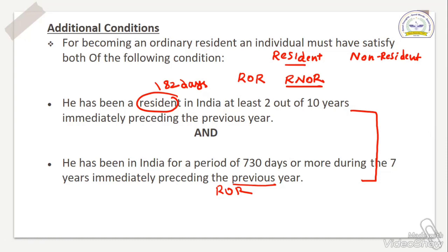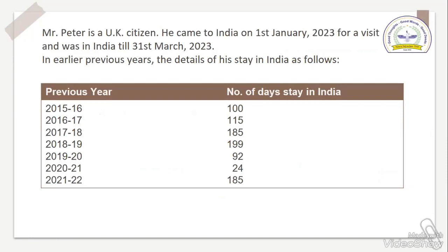Here we have completed the basic conditions. Now we are going to apply these basic conditions in a sum. This is a previous year exam question — very important. Mr. Peter is a UK citizen. He came to India on 1st January 2023 for a visit and was in India till 31st March 2023. In earlier previous years, the details of his stay in India are given. The previous year will be 22-23 — please remember for our examination point of view.